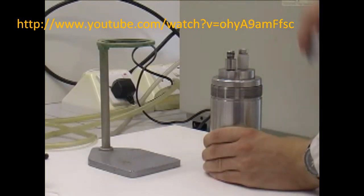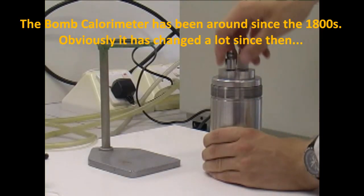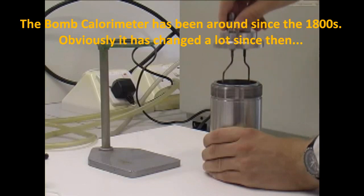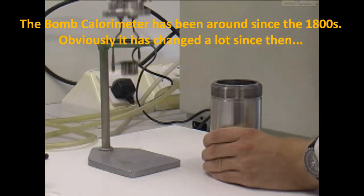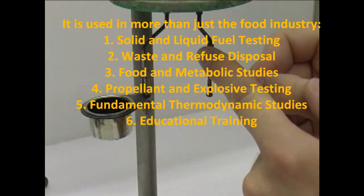The apparatus consists of a bomb shown and a calorimeter. Once disassembled, you can see the bomb consists of two sidearms and a crucible.